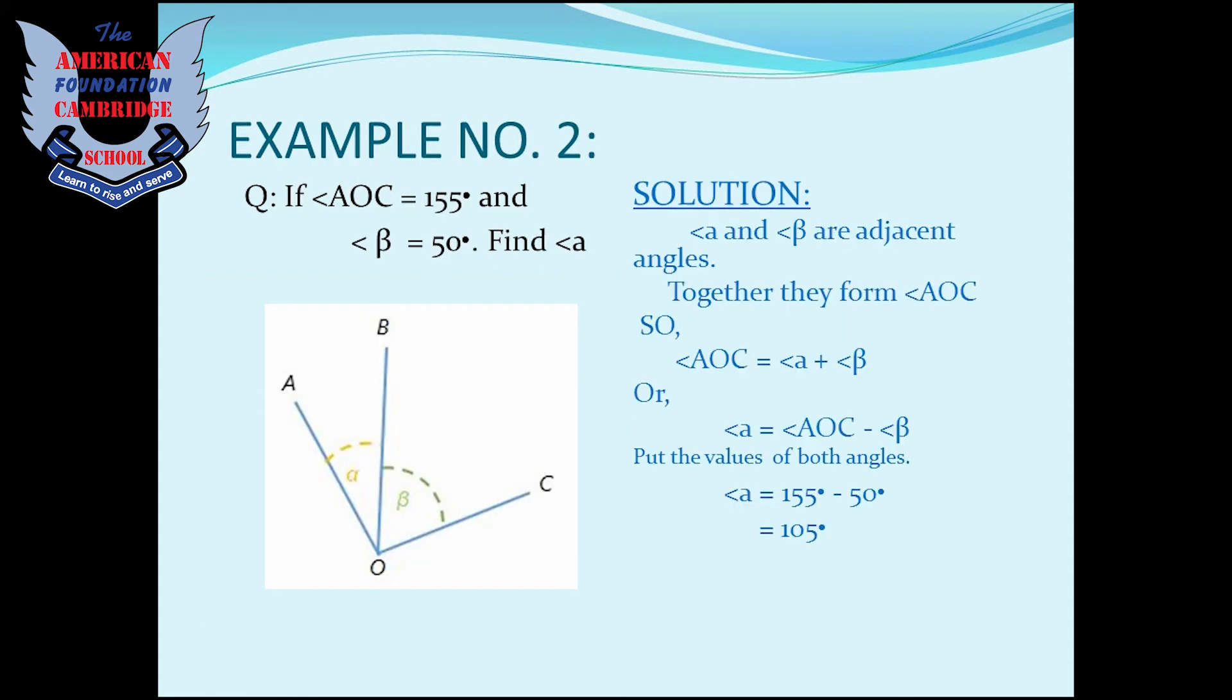Example number 2: The question is, if angle AOC is equal to 155 degrees and angle B is equal to 50 degrees, you have to find angle A.